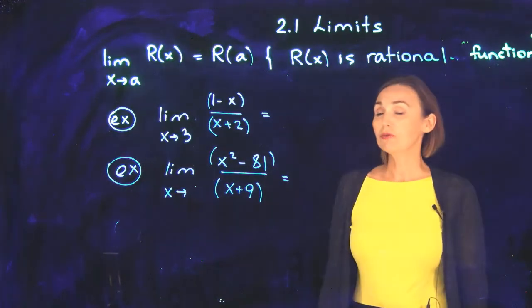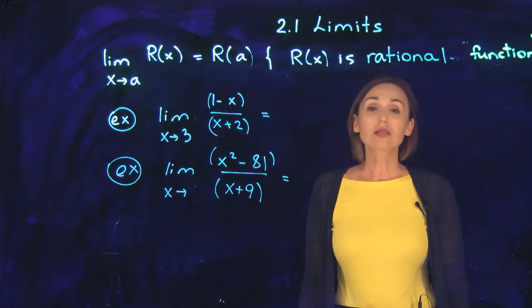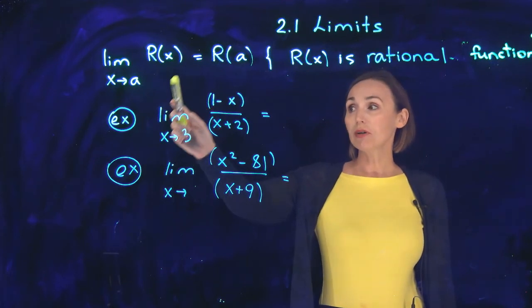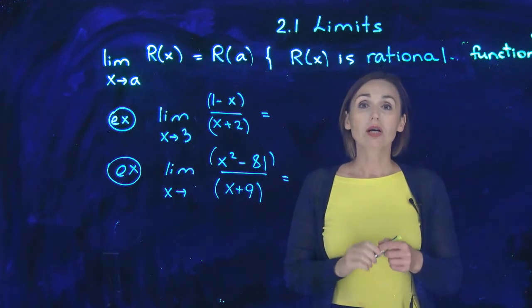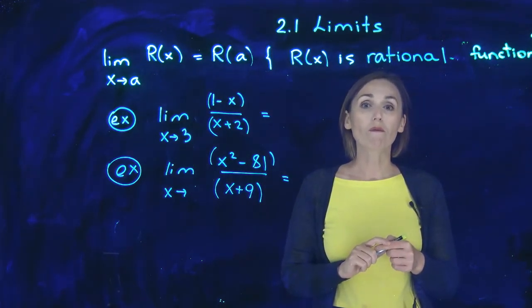There is one more type of function that is easier to find the limit, and this type of function is a rational function. The limit of a rational function when x approaches a will be the value of the function at this point. I just remind you that a rational function is polynomial over polynomial.